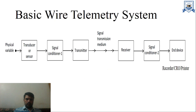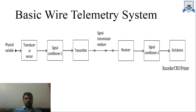Our first slide shows a basic wire telemetry system. Here we have a physical variable, which may be temperature, pressure, flow, current, voltage, any picture, any video, etc. The next block is our transducer or sensor, which converts the physical variable into a measurable form or into an electrical signal.